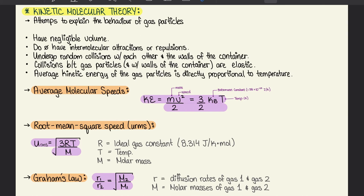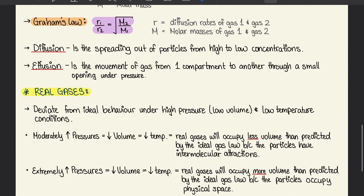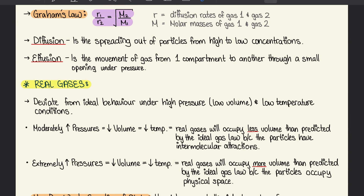Moving on to root mean squared speed, U_RMS equals the square root of 3RT/M, where R is the ideal gas constant (8.314 J/mol·K), T is temperature, and M is molar mass. Graham's law states that R₁/R₂ equals the square root of M₂/M₁, where R is the diffusion rate of gas 1 and gas 2, and M is the molar mass of each gas. Diffusion is the spreading out of particles from low concentration to high concentration. Effusion is the movement of gas from one compartment to another through a small opening under pressure.